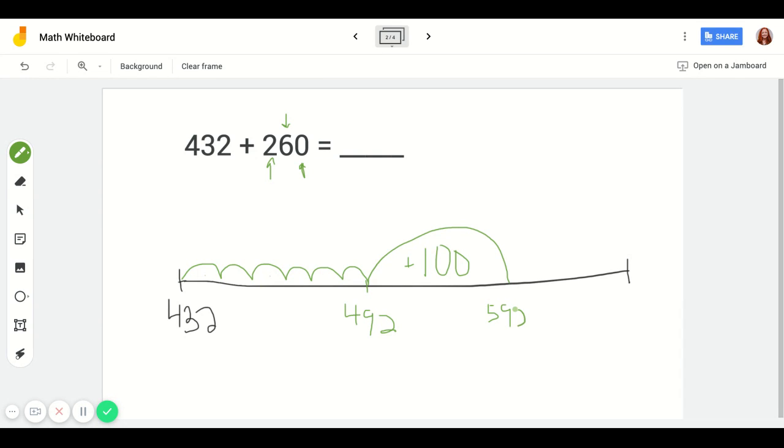And then I have to add one more 100 again. So if I come over here, adding one more 100 from my hundreds place, 592 plus another 100 would get me 692.